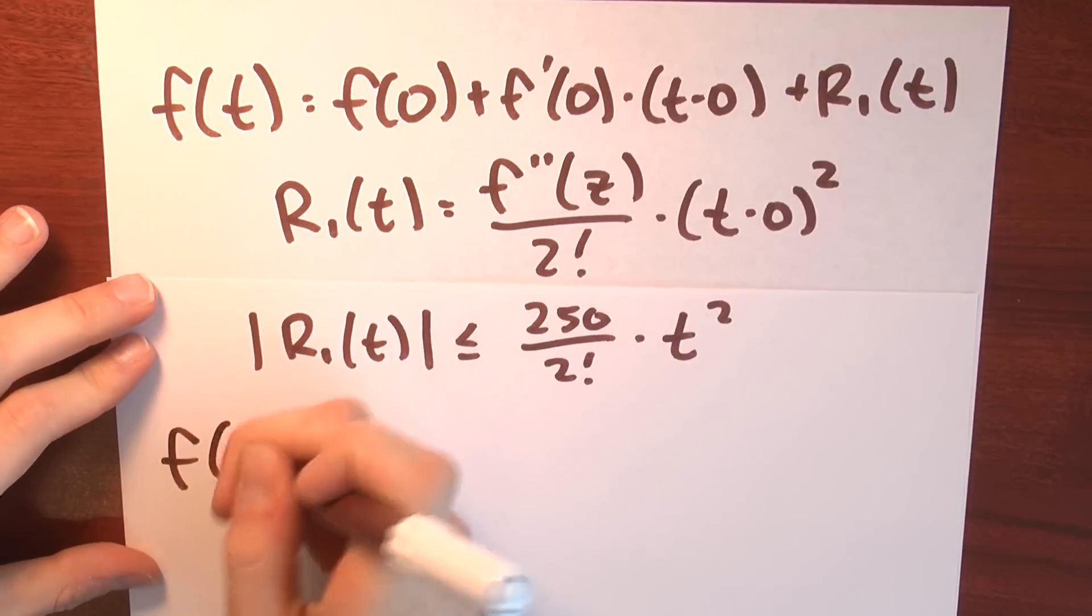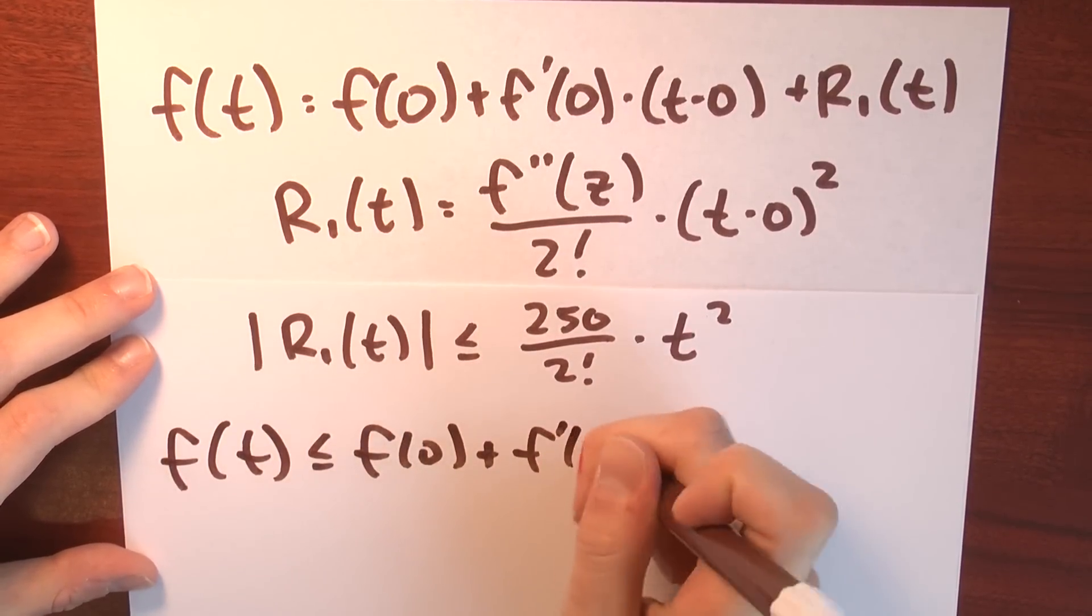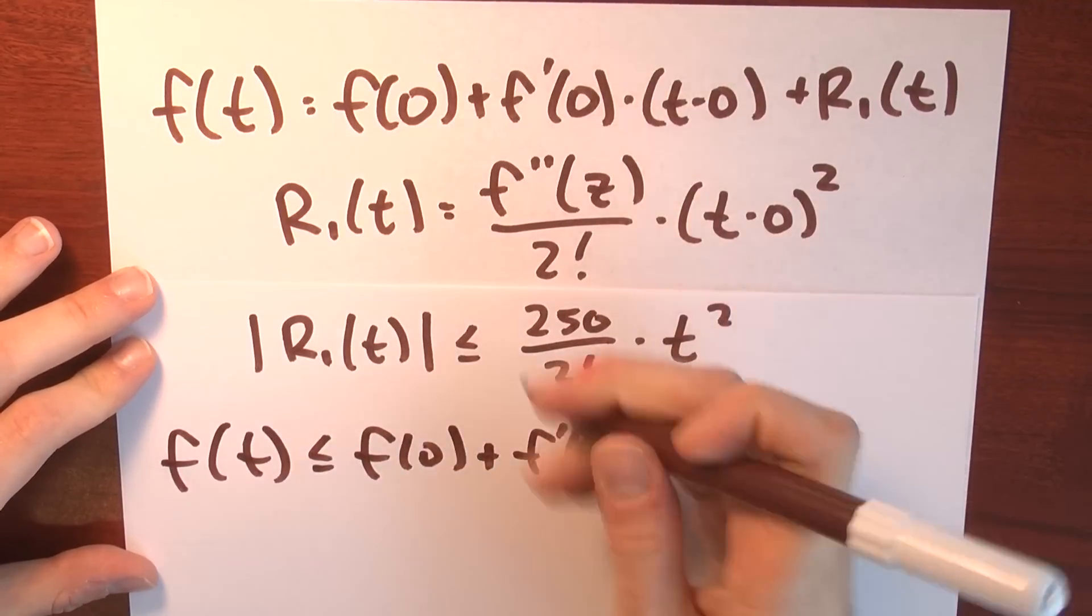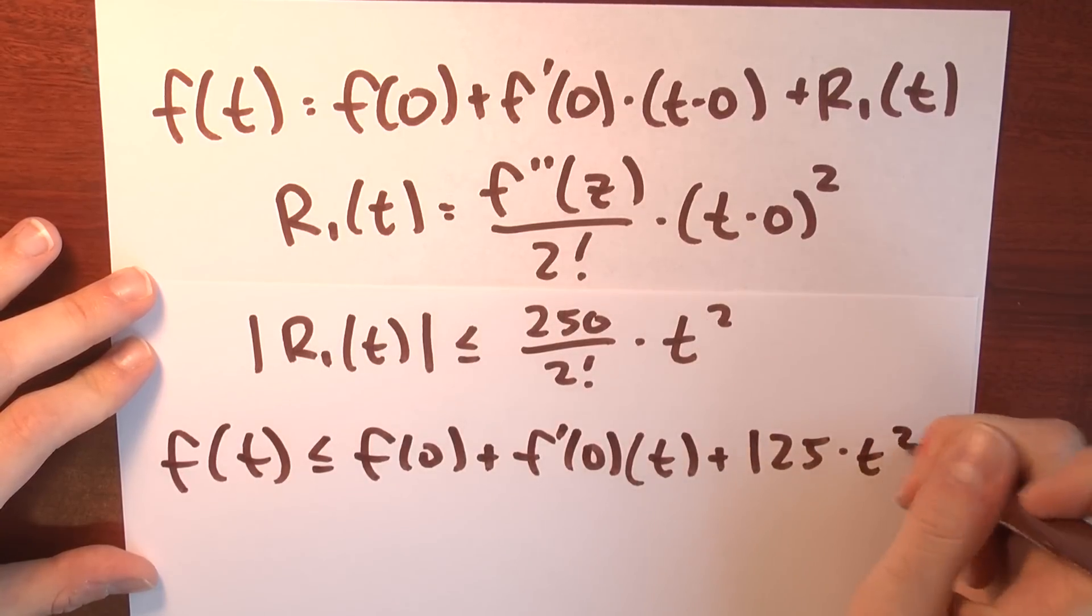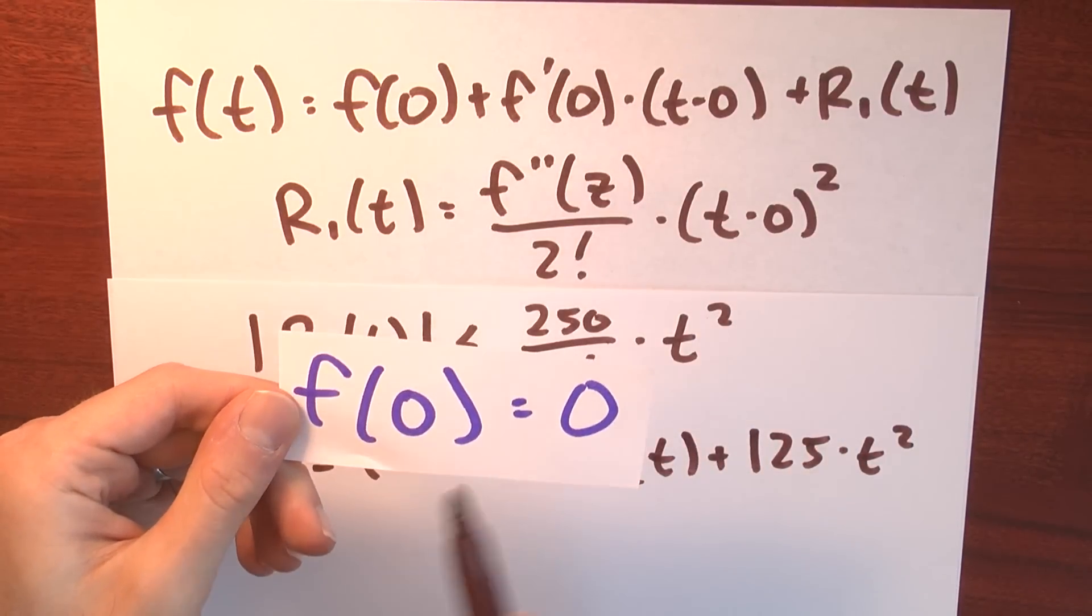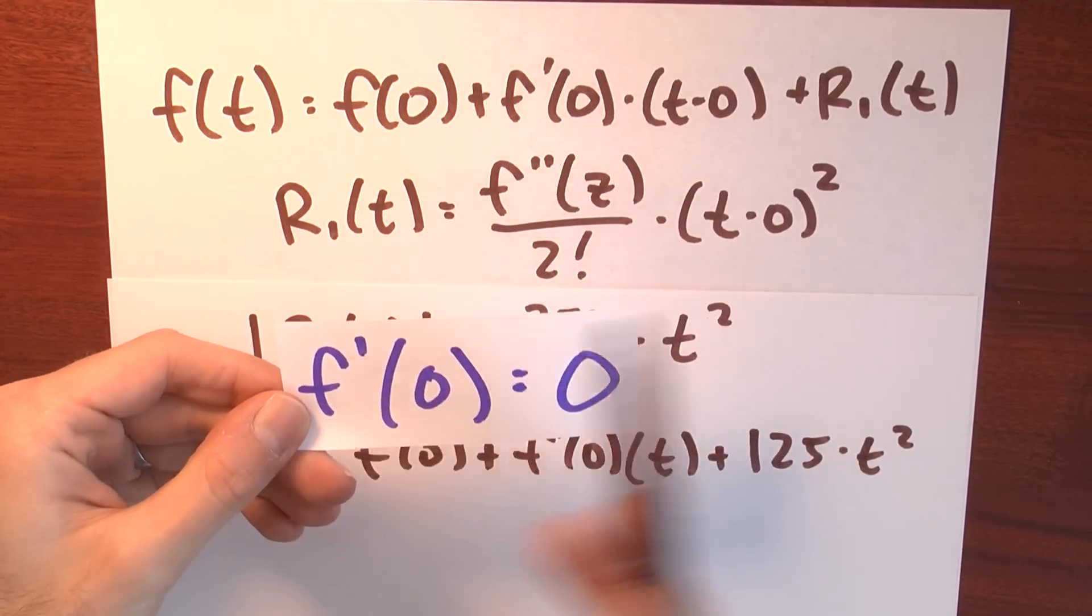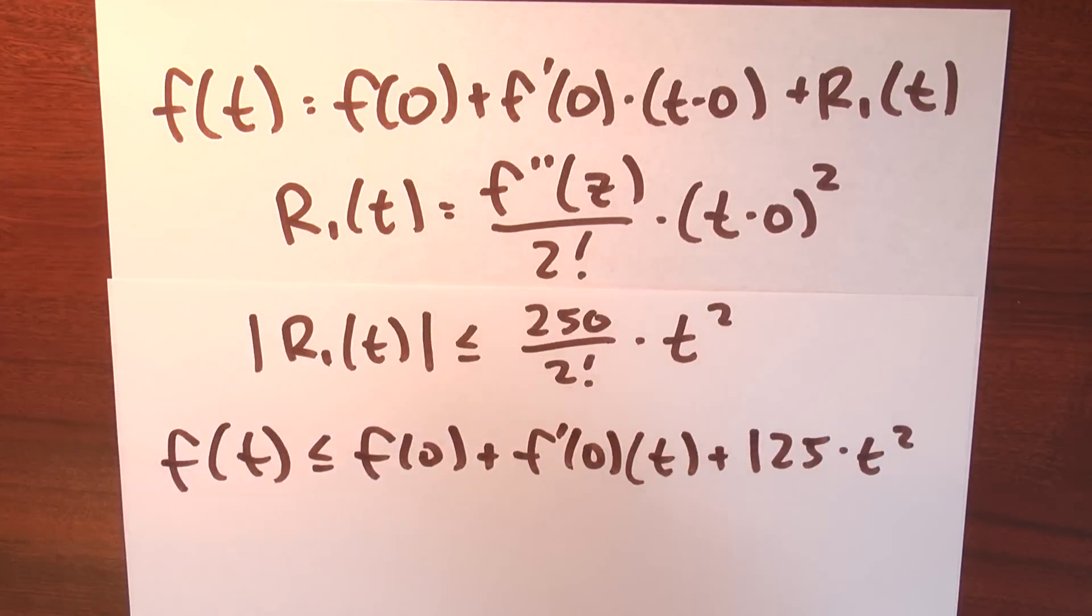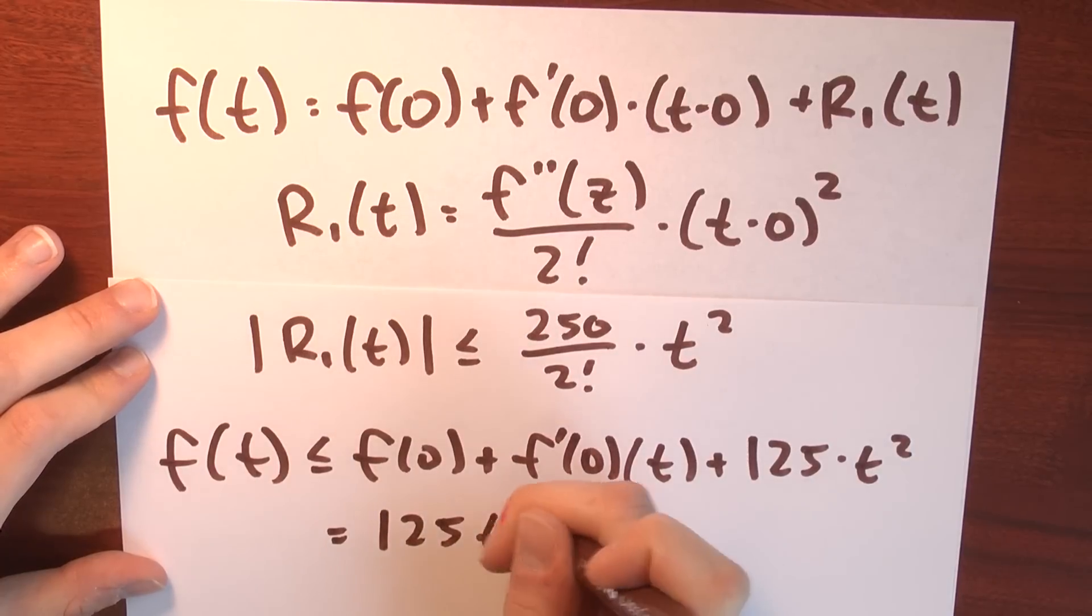Now I can say something about how large f of t is. So f of t is less than or equal to f of 0 plus f prime of 0 times t plus this quantity. 250 divided by 2 factorial is 125 times t squared. Now I know what f of 0 is. I'm assuming that I'm starting at a point I'm calling the origin. And I know something about the derivative of f at 0. I'm assuming that I start my journey motionless. So this quantity here is equal to 0 plus 0 times t plus just 125 t squared.